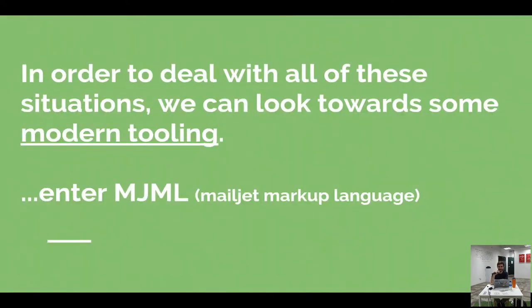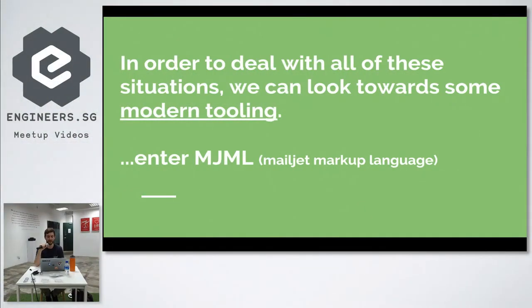But there is an alternative. When we look at the kinds of tools that have been created in the last five years or so for front-end web development, we are living in this really nice golden age where everything is becoming a lot easier. Tonight I'd like to introduce a tool I found called MJML, which stands for Mailjet Markup Language. I'm not affiliated with them in any way, but it's something I used at MoneySmart and it just made my life a lot easier.